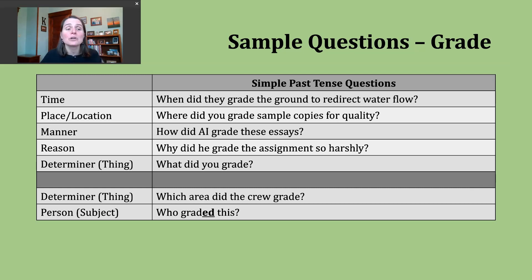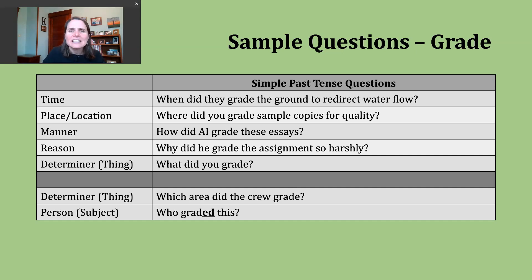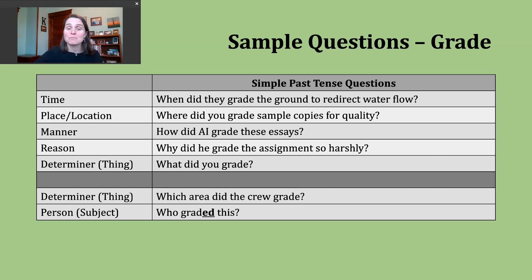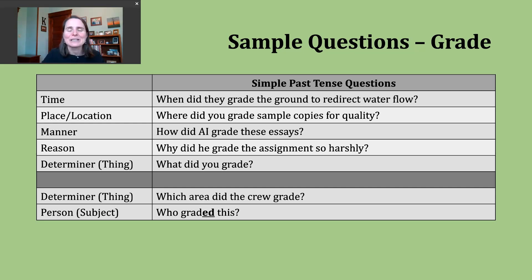Another type of question is a question about manner. For that, we use the question word how — when we want to know the way in which a particular action has been done. An example: 'How did AI grade these essays?' AI, short for artificial intelligence, is a big topic in education — something teachers are talking a great deal about in terms of both instruction and grading. We want to know: how did it do it? What sort of mechanisms? What was it looking for?